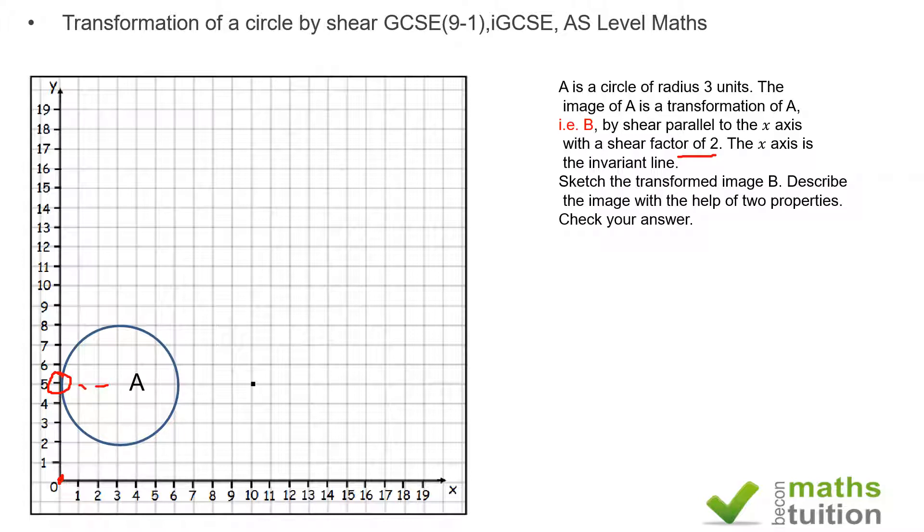So that's going to be 1, 2, 3, 4, 5, 6, 7, 8, 9, 10—hence that spot there. The point at (0, 5) has been transformed to (10, 5).